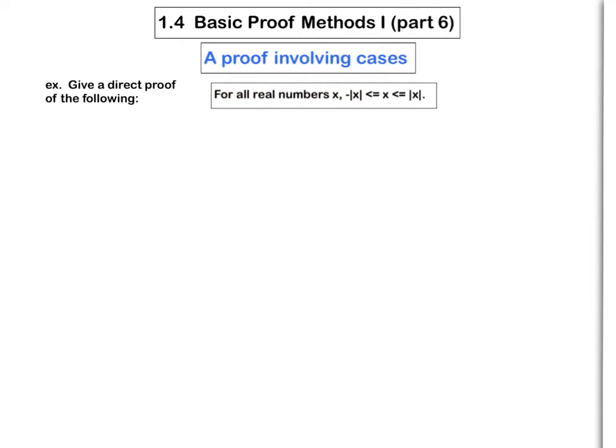The first step is to write this out using symbols. Here's my answer written out in symbols: for all real numbers x, minus absolute x is less than or equal to x, and x is less than or equal to absolute x.